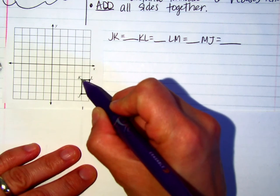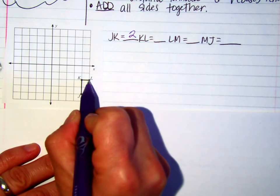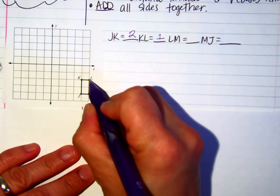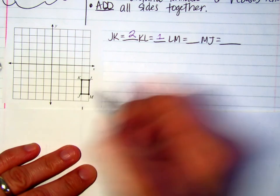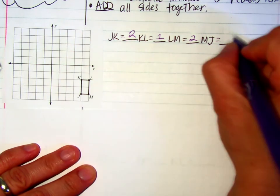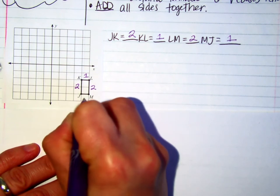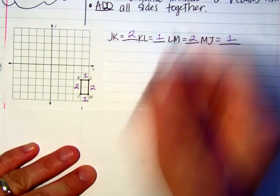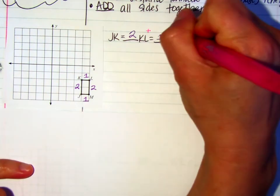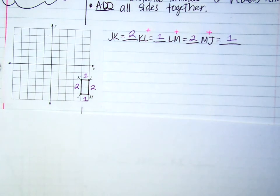So there's one box and two boxes. That's two units. From K to L, there's only one unit. From L to M, there's two units. And from M to J, there's only one unit. So two units, one unit, two units, one unit. Now all we have to do is add all of those lengths together to get our total perimeter.